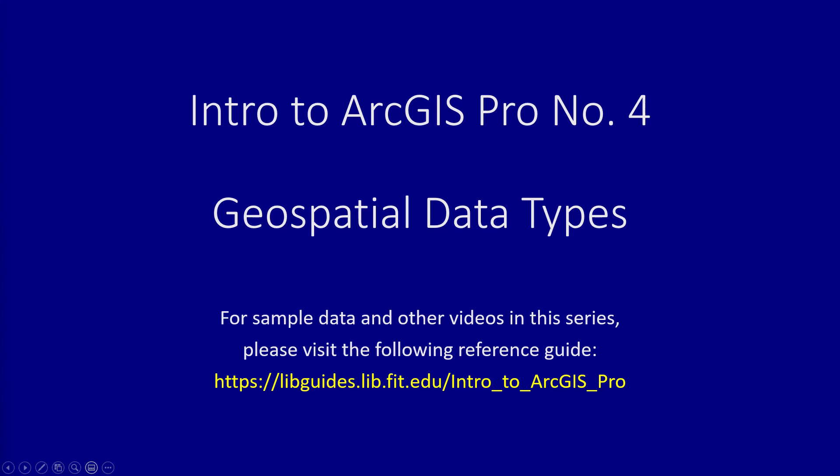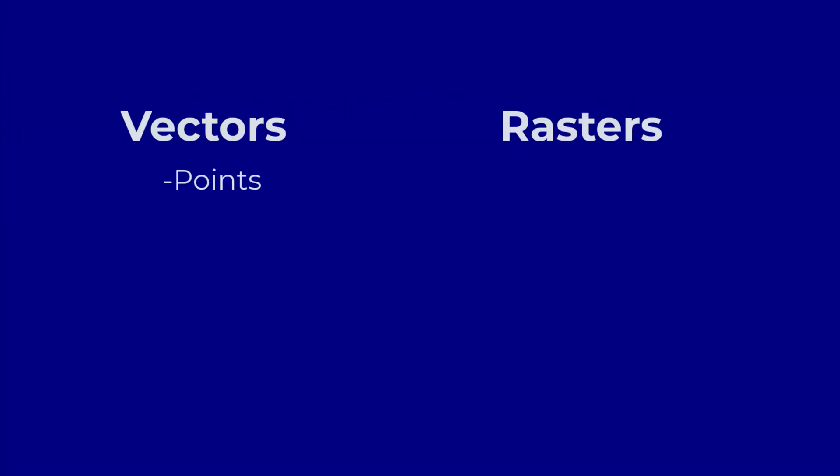For starters, data is mapped in the form of either vectors or rasters. Vectors are further broken down into points, lines, and polygons.